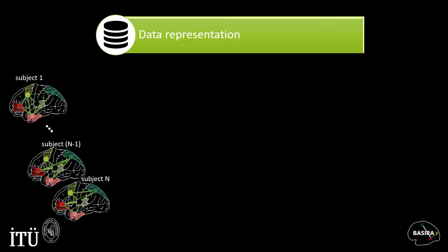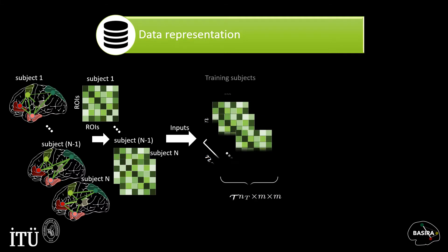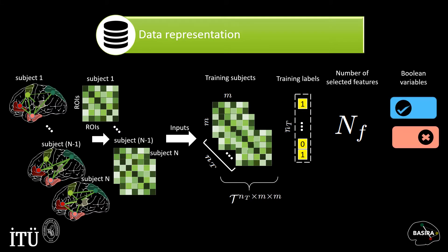Before running the code, I will show you how your data should be represented. Given a set of brain networks encoded in symmetric matrices as shown, to train our code, you need to provide a tensor of size NT by M by M, stacking the symmetric matrices of the training subjects, where M denotes the number of nodes and NT denotes the number of subjects. A vector of size NT stacking the training labels, the number of selected features NF, and a boolean variable named display_results. If display_results equals 1, it will display the atlas of class 1, the atlas of class 2, and the top features matrix. If display_results equals 0, no display except for the average results across all cross-validation runs.